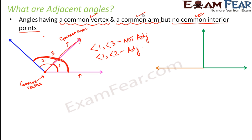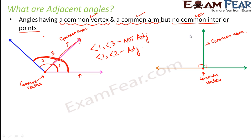Let's take one more example. Here we have two 90-degree angles. By now we know that these are supplementary angles because their sum is 180 degrees. But do you think they are adjacent? They appear to be sitting next to each other. They have a common vertex, they have a common arm, and for each angle the interior region is separate — so they cannot have any common interior points. Therefore we can say that these two angles are also adjacent angles.